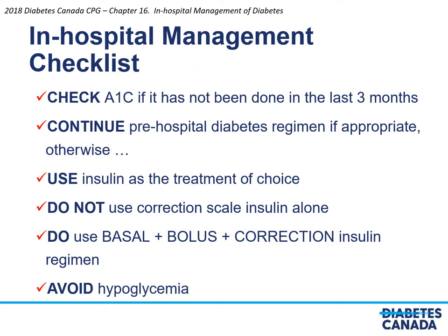The checklist for this chapter includes: check A1C on patients with newly diagnosed hyperglycemia, diabetes risk factors, or pre-existing diabetes if it has not been done in the previous three months. Continue pre-hospital diabetes regimen if appropriate; otherwise, use insulin as the treatment of choice. Do not use correction scale insulin alone. Do use a basal plus bolus plus correction insulin regimen. And avoid hypoglycemia.